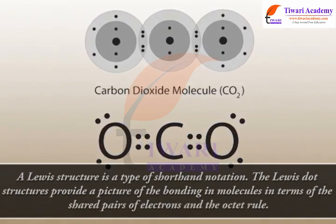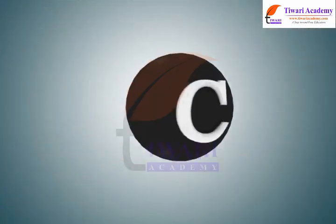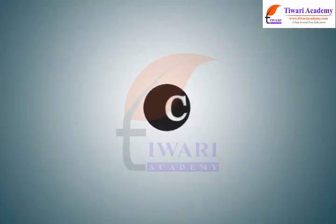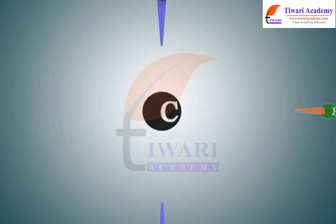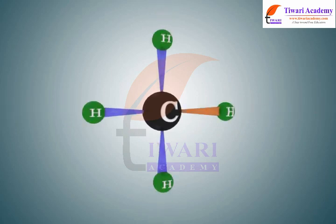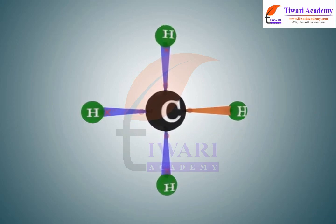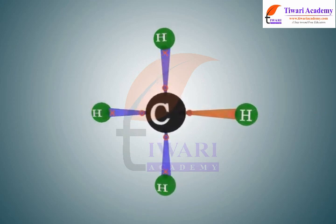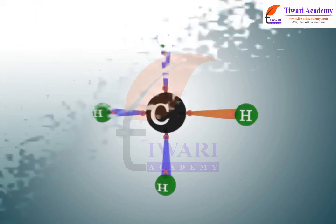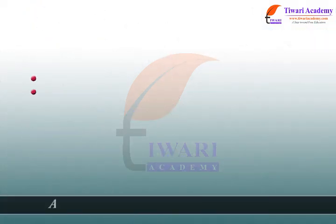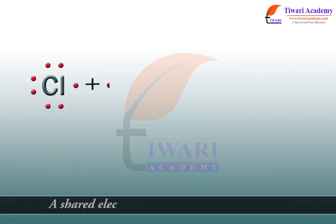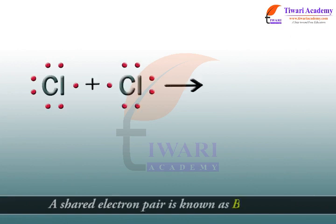To draw a Lewis structure: set a central atom, connect to other atoms with a single bond, determine the number of valence electrons, and arrange the electrons for bond formation. A shared electron pair is known as a bond.